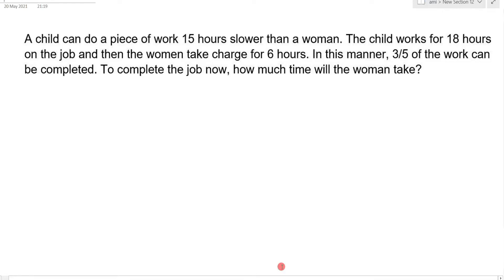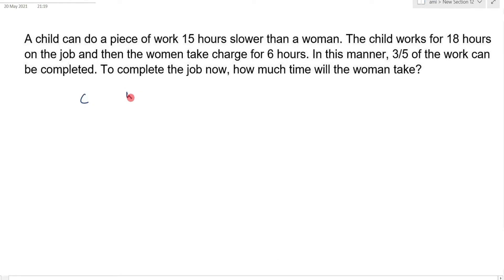A child can do a piece of work 15 hours slower than a woman. The child works for 18 hours on the job and then the woman takes charge for 6 hours. In this manner, 3/5 of the work can be completed. To complete the job, how much time will the woman take? If the woman completes in x hours, then the child takes x plus 15 hours.